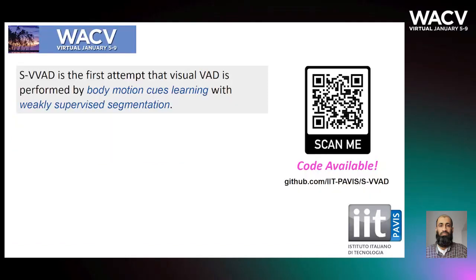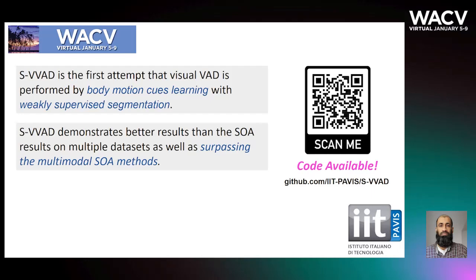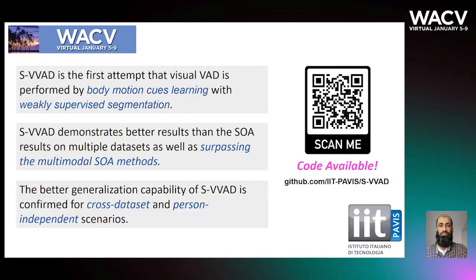SVWatt is the first attempt at visual voice activity detection performed by motion cues learning with weakly supervised segmentation. SVWatt demonstrates better results than the state-of-the-art on multiple datasets, surpassing even multimodal state-of-the-art methods. The better generalization capability of SVWatt is confirmed for cross-dataset and person-independent scenarios. The code of SVWatt can be reached by scanning the QR code on this slide or by visiting the IIT-Povice GitHub page.